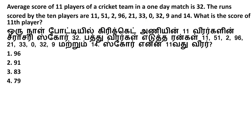The next question: the average score of 11 players of a cricket team in a one-day match is 32. The runs scored by 10 players are: 11, 51, 2, 96, 21, 33, 0, 32, 9, and 14. What is the score of the 11th player? The 11th player's one-day match average is 32.